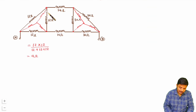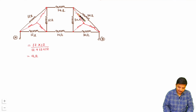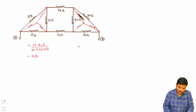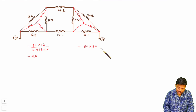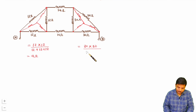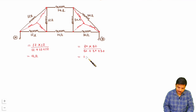Each of these star resistances is 4 ohm. Over here also we have a delta to star conversion. The resistor value is the multiplication of adjacent resistors, so that is 30 into 30 divided by the summation of all resistors of that delta, which is 30 plus 30 plus 30. That is 30 by 3, which is 10 ohm.